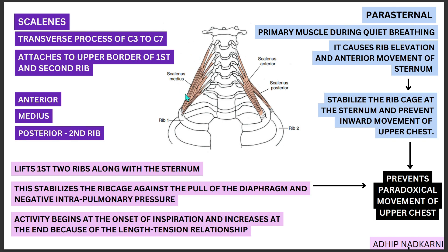As inspiration starts, the scalenes become active, but at the end of inspiration their activity increases even more because of the ideal length-tension relationship. When a muscle is at its optimal length, it is able to generate really good tension. At the end of inspiration, the scalene is in a position where the sternum and ribs are elevated, allowing it to contract really well — giving it the edge to activate more and help with inspiration.